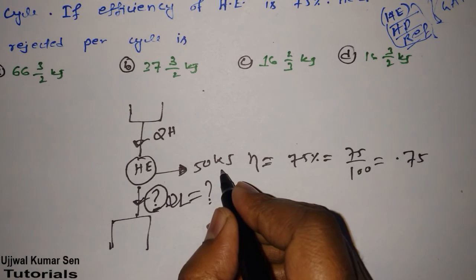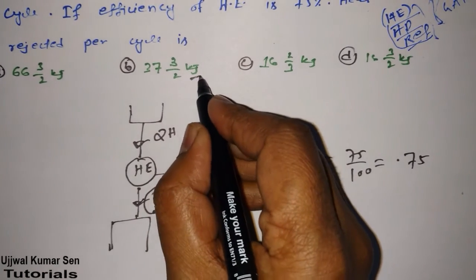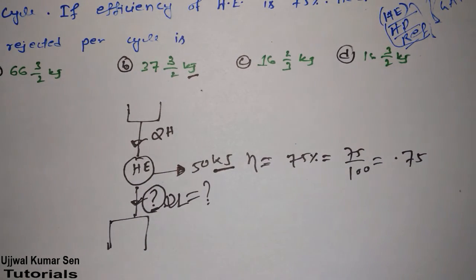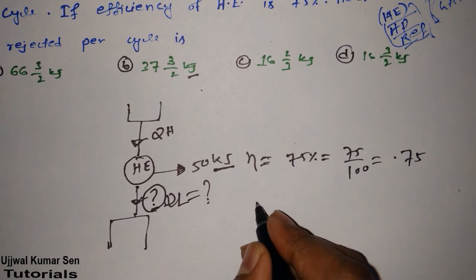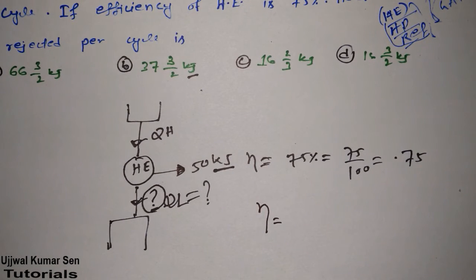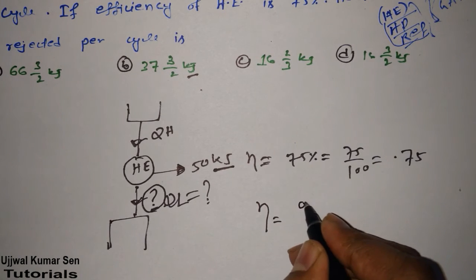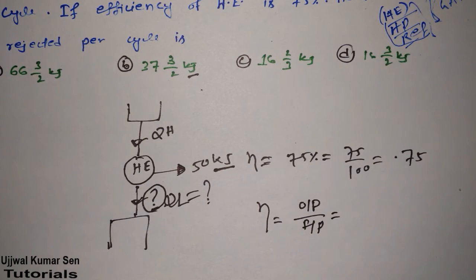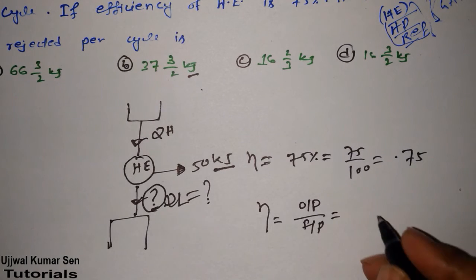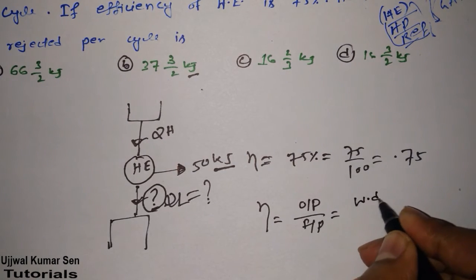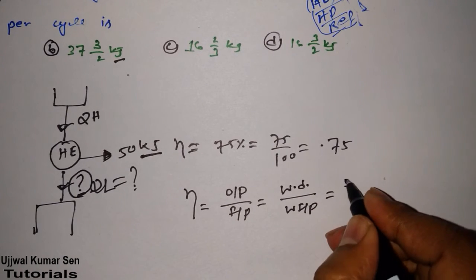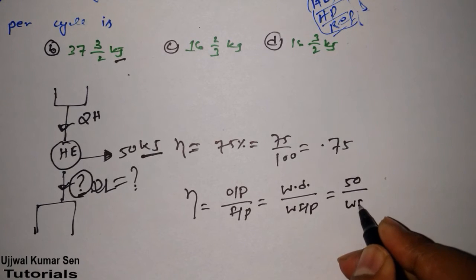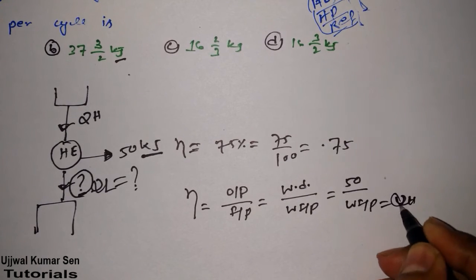Unit check: we have given in kilojoule and we have to find out kilojoule, so we don't have any problem with the unit system. Now relate things with efficiency and work done, work output. We know that efficiency, there is one formula that is universal in terms of heat, that is output by input, and if we wanted to relate these in terms of heat, then we can say that work done by work input. What is work done here? 50, and work input we don't know. That is, I am saying here QH.